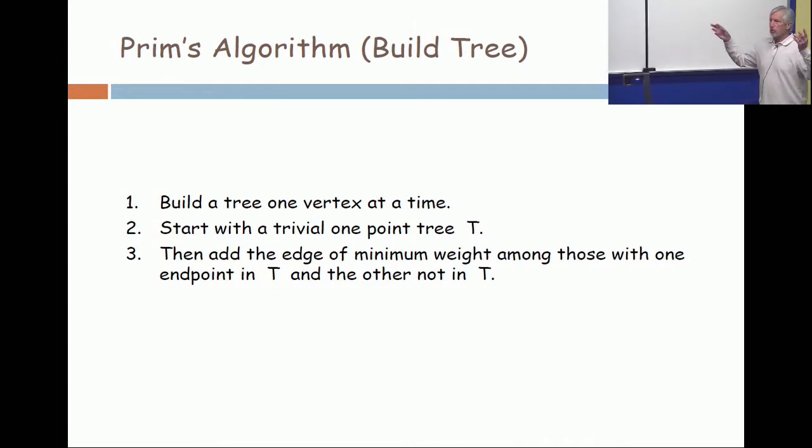Or they say, start with San Francisco. And our bank things, you know, if one of the places is the corporate headquarters, you probably start with that one just to satisfy management. Start with a trivial one-point tree. And then you ask your question, what's the cheapest edge you can add, which simply expands the tree that you have to this point?